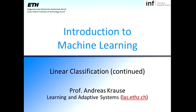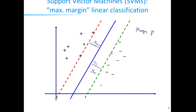We've been discussing classification, linear classification. We first introduced the perceptron and then a slight modification that led to the support vector machine, which is arguably one of the most widely used linear classifiers. It basically tries to find a classifier that maximizes the margin — the distance to both classes.